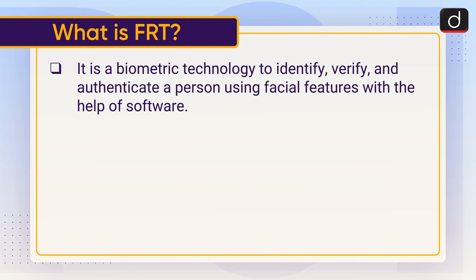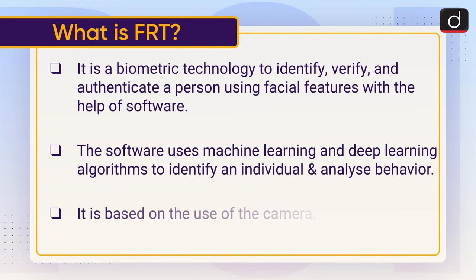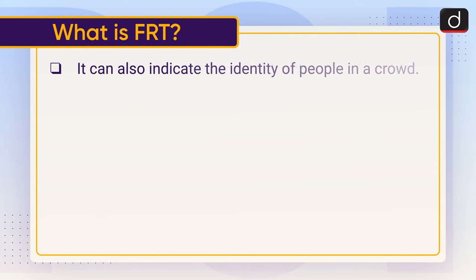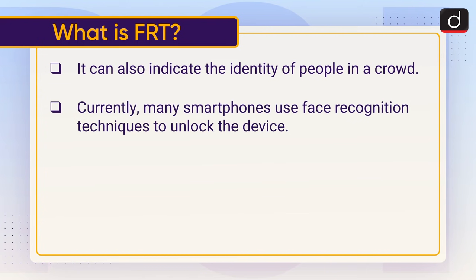FRT is a biometric technology to identify, verify, and authenticate a person using facial features with the help of software. The software uses machine learning and deep learning algorithms to identify an individual and analyze behavior. It is based on the use of a camera and can also indicate the identity of people in a crowd.